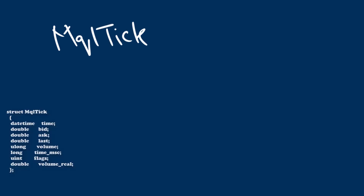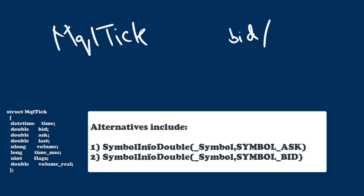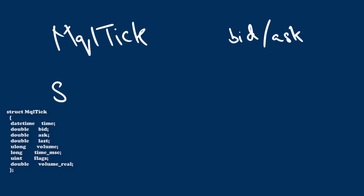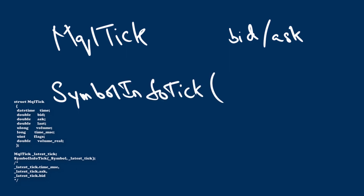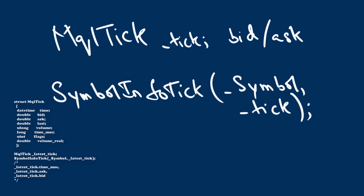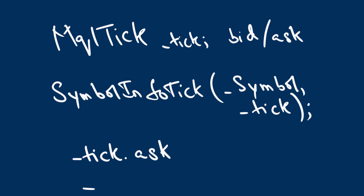The MQLTick data structure houses bid and ask information. To get bid and ask prices, first populate the struct with the most recent tick's data, then access the variables through the struct. Invoke SymbolInfoTick, providing the symbol and the struct — call it _tick. SymbolInfoTick captures the most recent snapshot of bid and ask prices among other variables. You then access ask, bid, tick volume, time, etc. from inside the MQLTick struct.